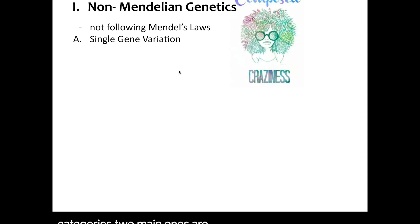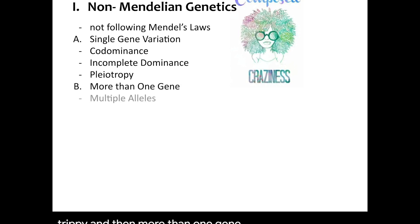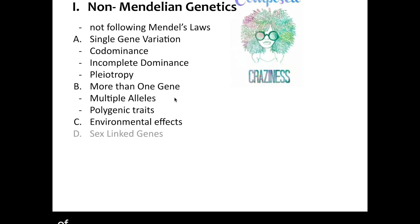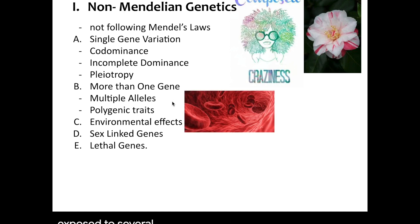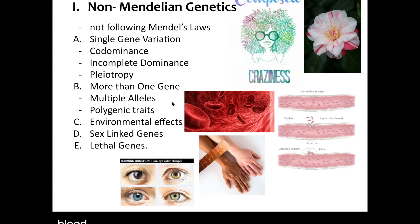The two main categories are single gene variation, which includes codominance, incomplete dominance, and pleiotropy, and then more than one gene, including multiple alleles and polygenic traits. We'll also talk about environmental factors on genes, sex-linked genes, and lethal genes. We'll be exposed to several examples such as the Camellia flower, blood, eye and skin color, and hemophilia.